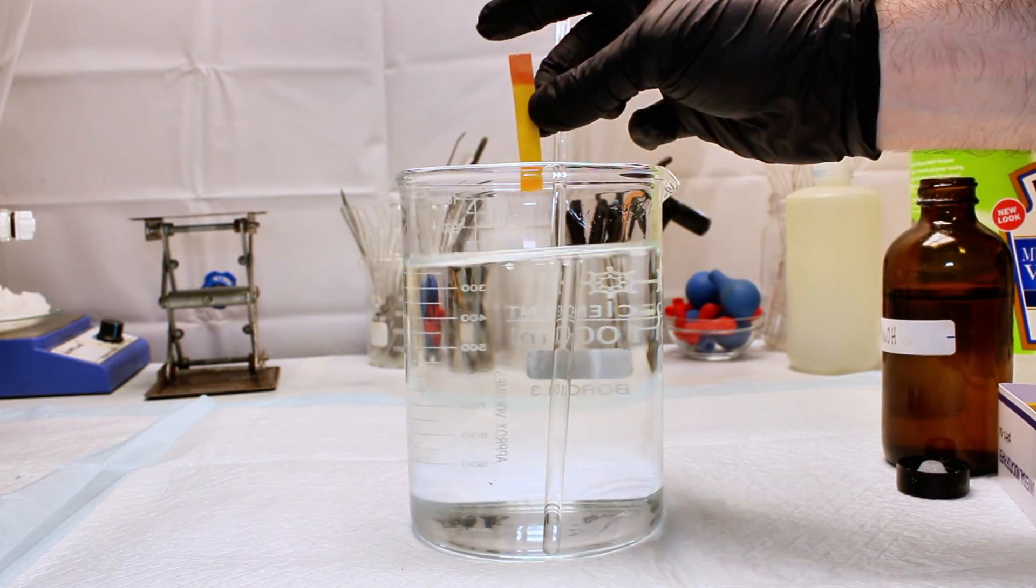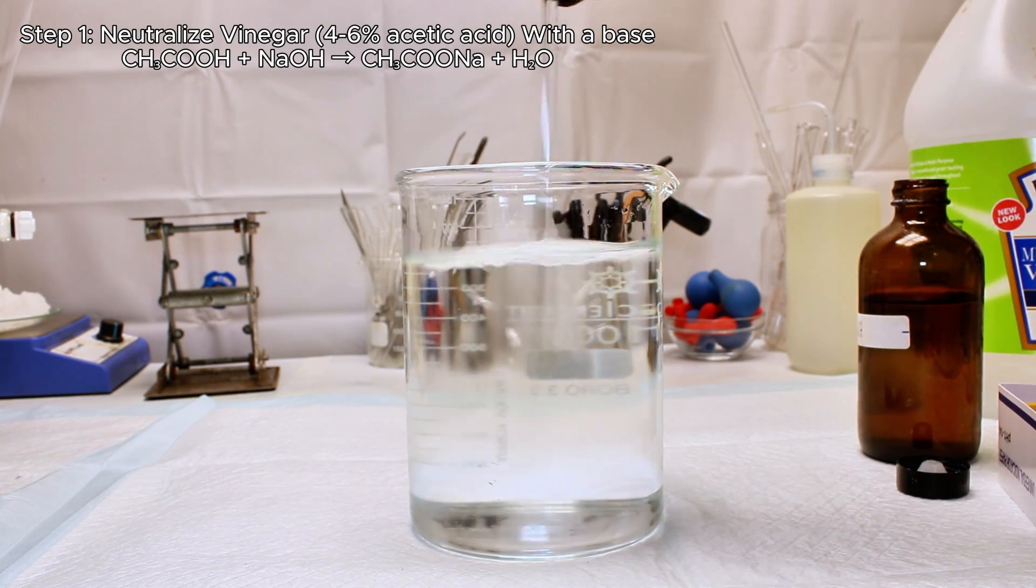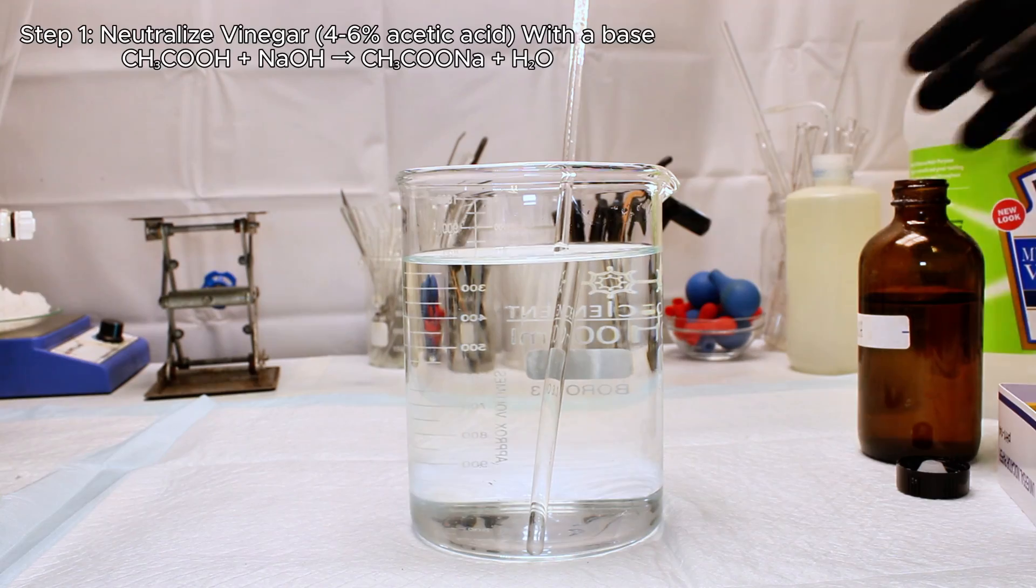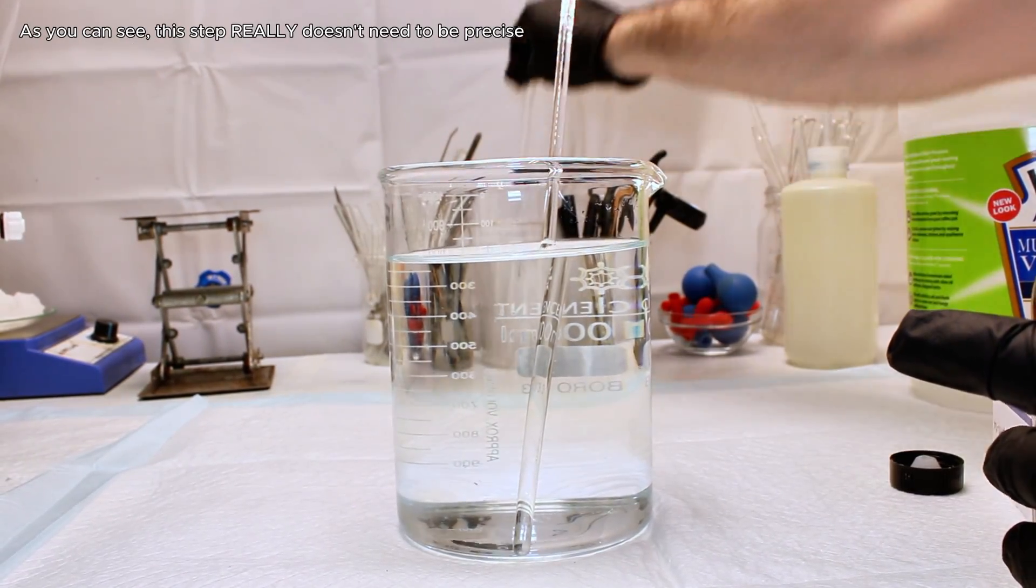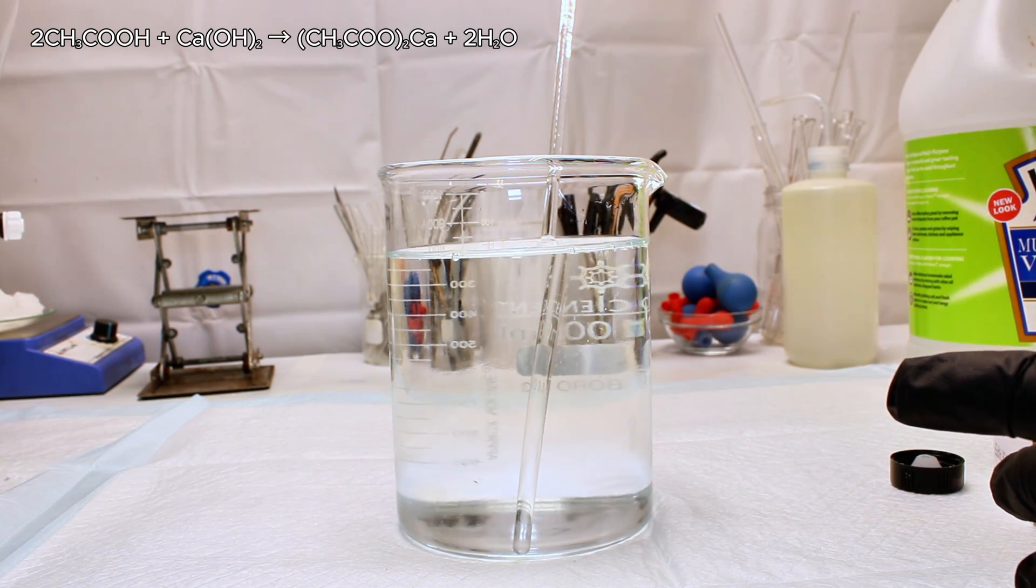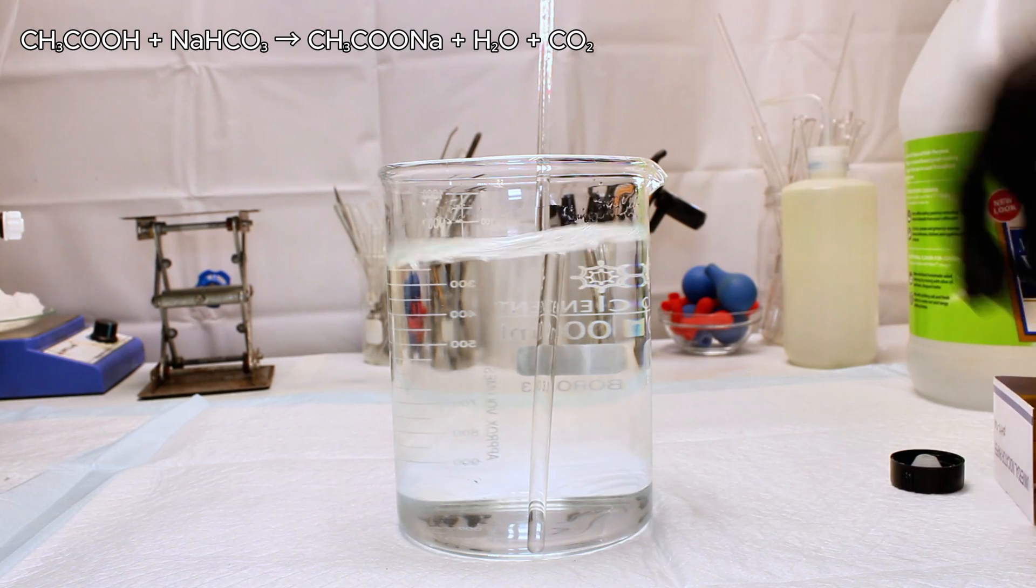Anyway, to get started I go ahead and neutralize some vinegar with some 10 molar sodium hydroxide. This is a pretty standard acid-base reaction and will result in the formation of water as well as the salt sodium acetate. Historically, the calcium salt of acetate was made instead by using calcium hydroxide, and you can also use sodium bicarbonate.